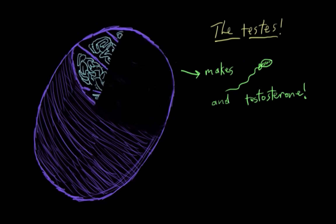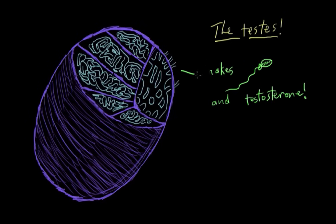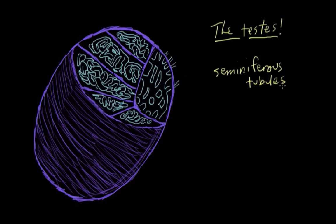So, let's look inside the testes and see what we find. Inside, we find this really convoluted set of tubes in light blue here. These are called seminiferous tubules. The sperm are actually made inside these tubules,